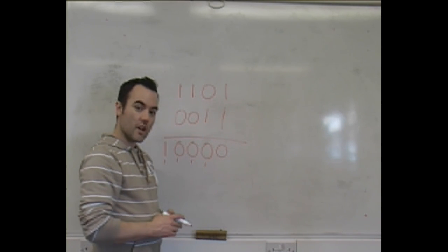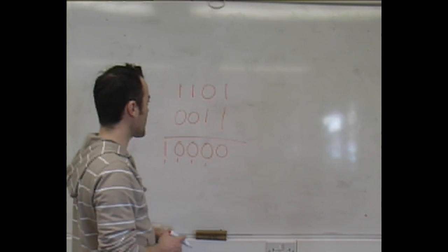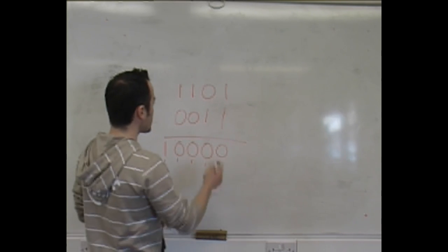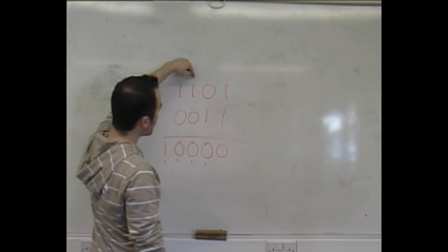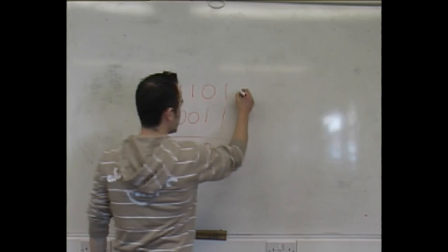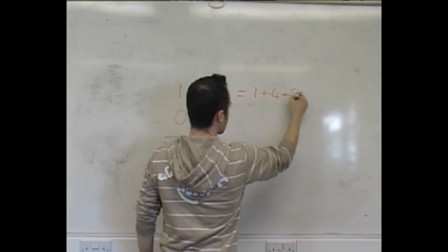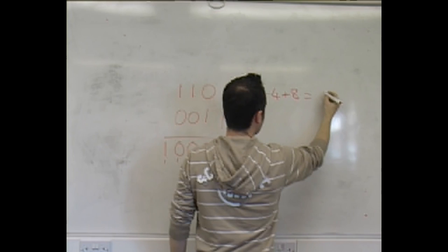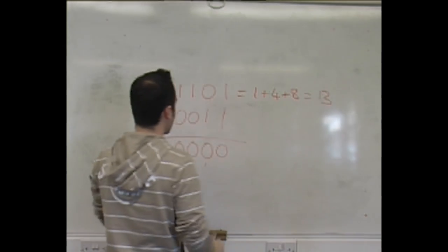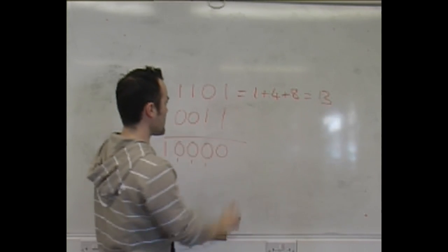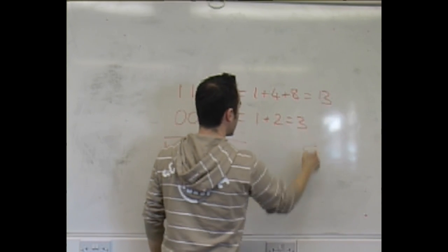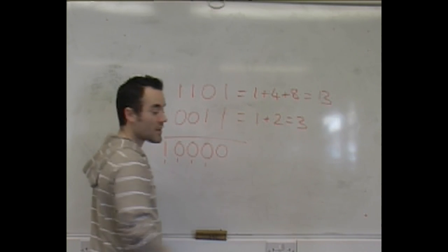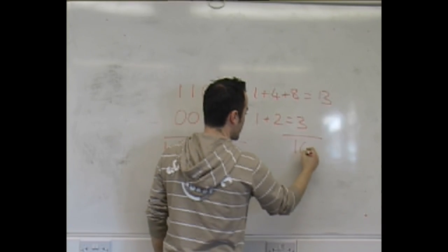A really useful quick check for this is to convert both into their decimal values. So this gives me 1, 4, and 8—that's 13. This is 1 and 2, which gives me 3. 13 and 3 is 16.